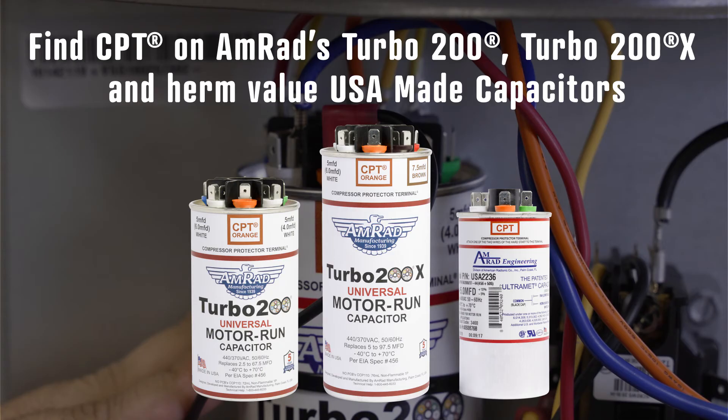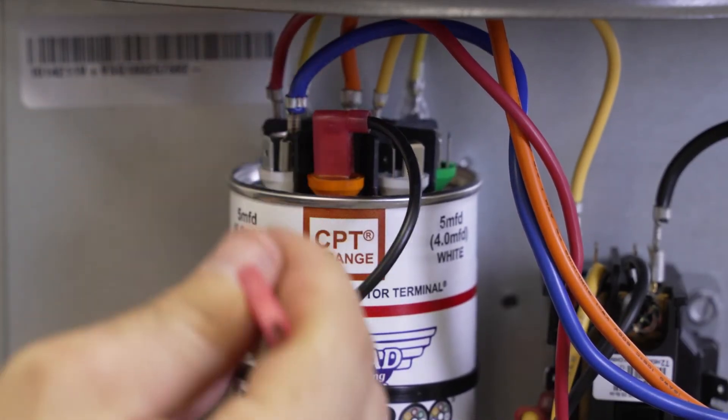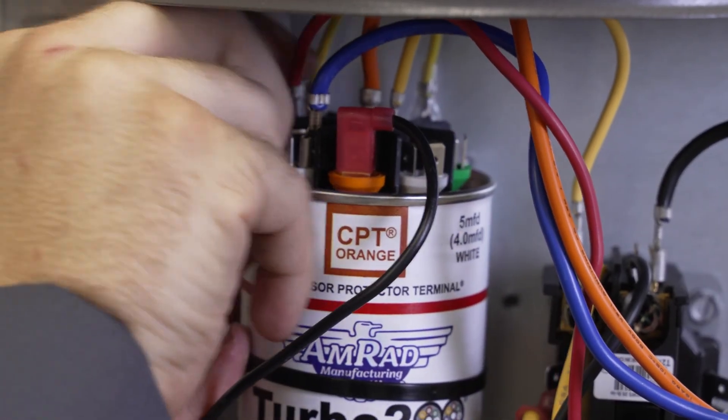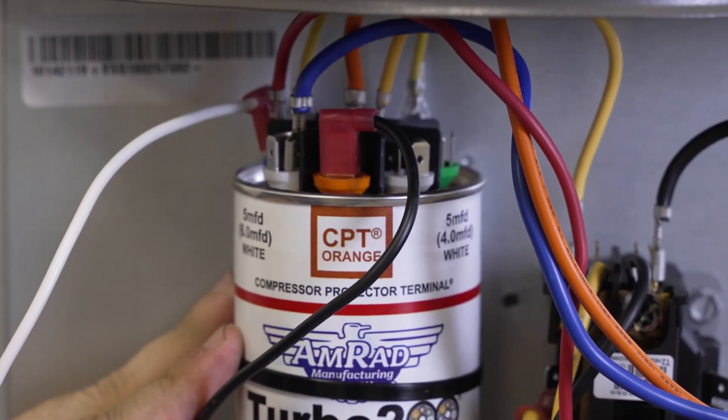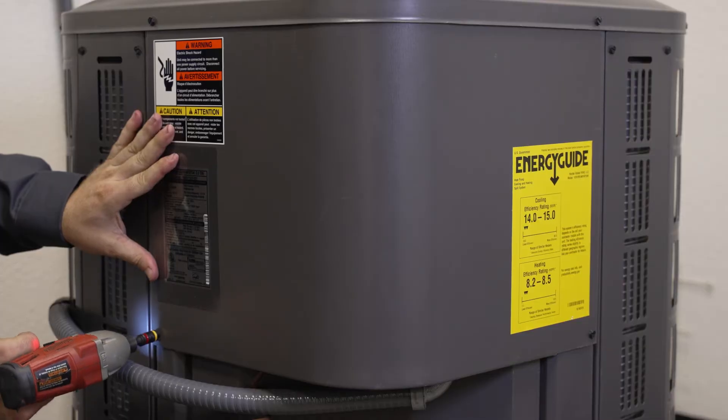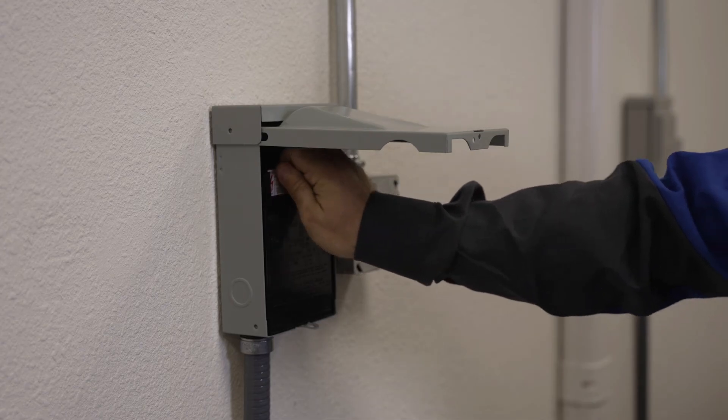AMRAD and Global highly recommend always using a CPT when connecting any hard start. You can check out our videos on CPT for additional information. Then attach the other wire to the highest compressor terminal, the 25 MFD in our case. Close up the unit and reconnect the electricity to complete the install.